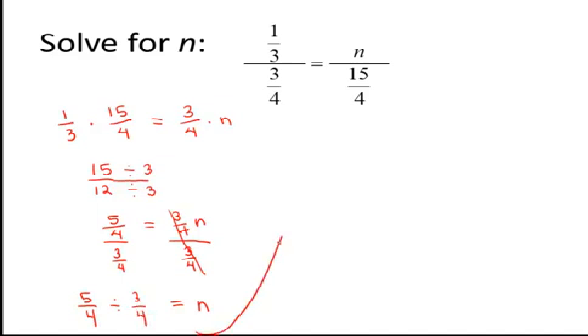And then remember to divide fractions we can multiply by the reciprocal. Multiplying along the top gives 20. Multiplying along the bottom gives 12.